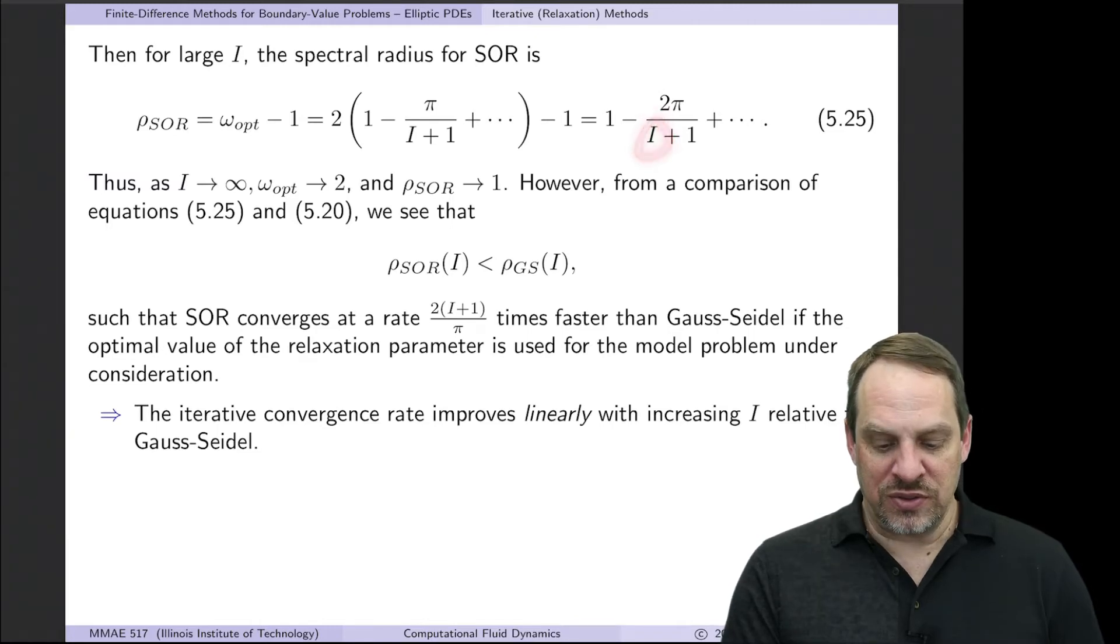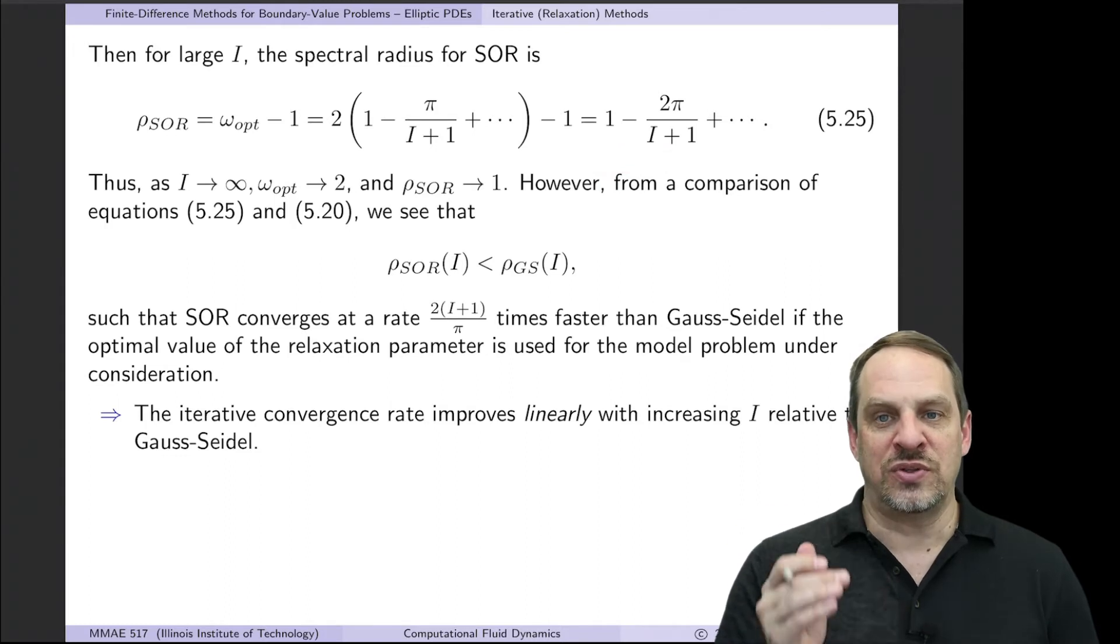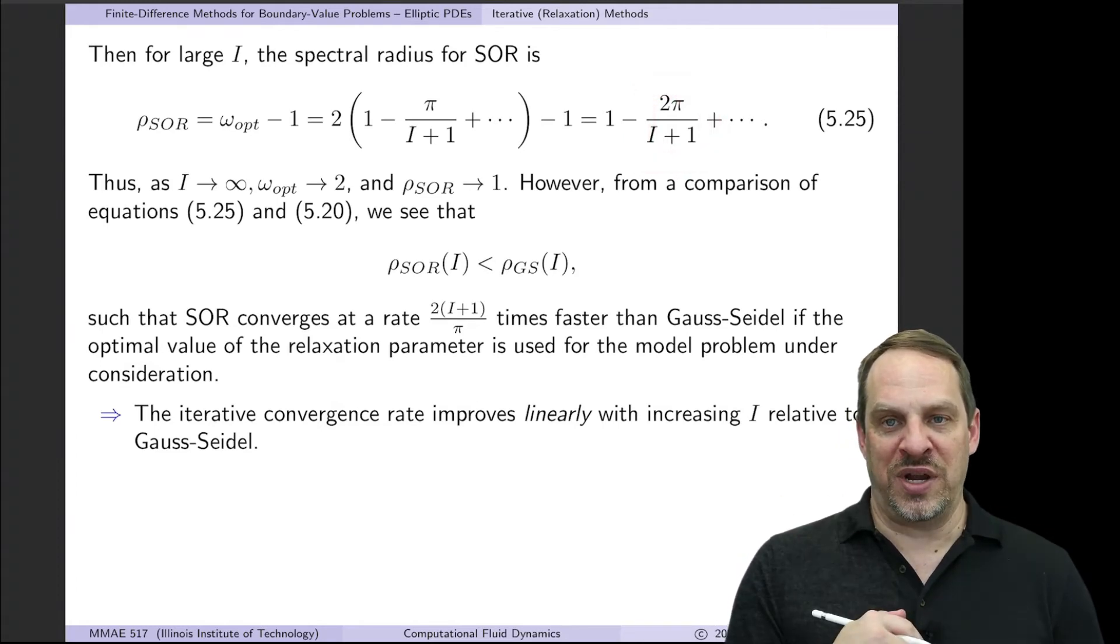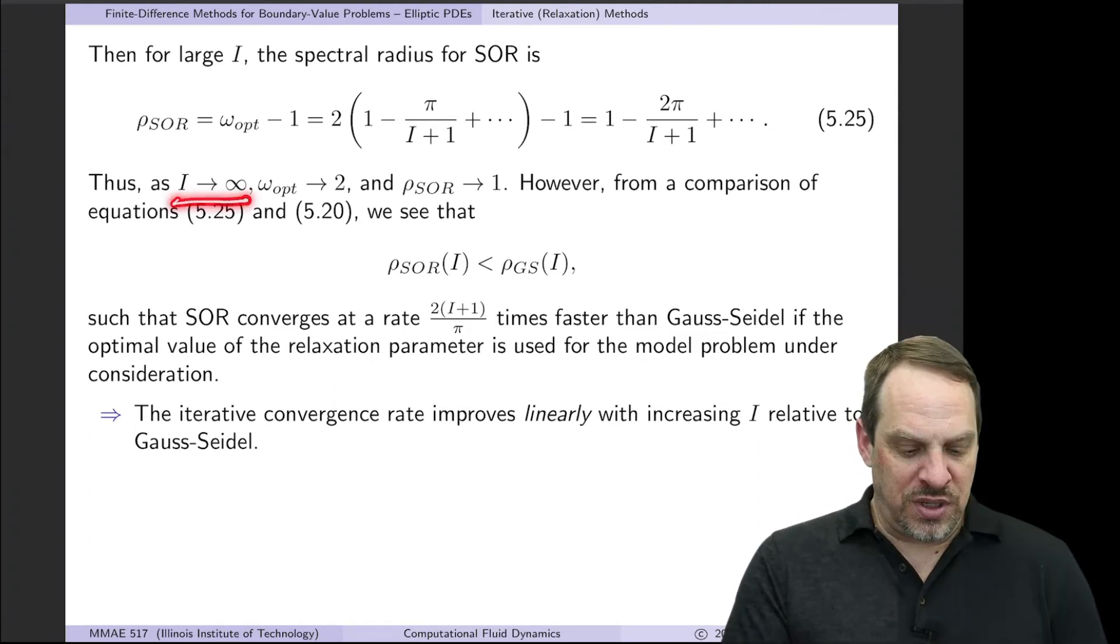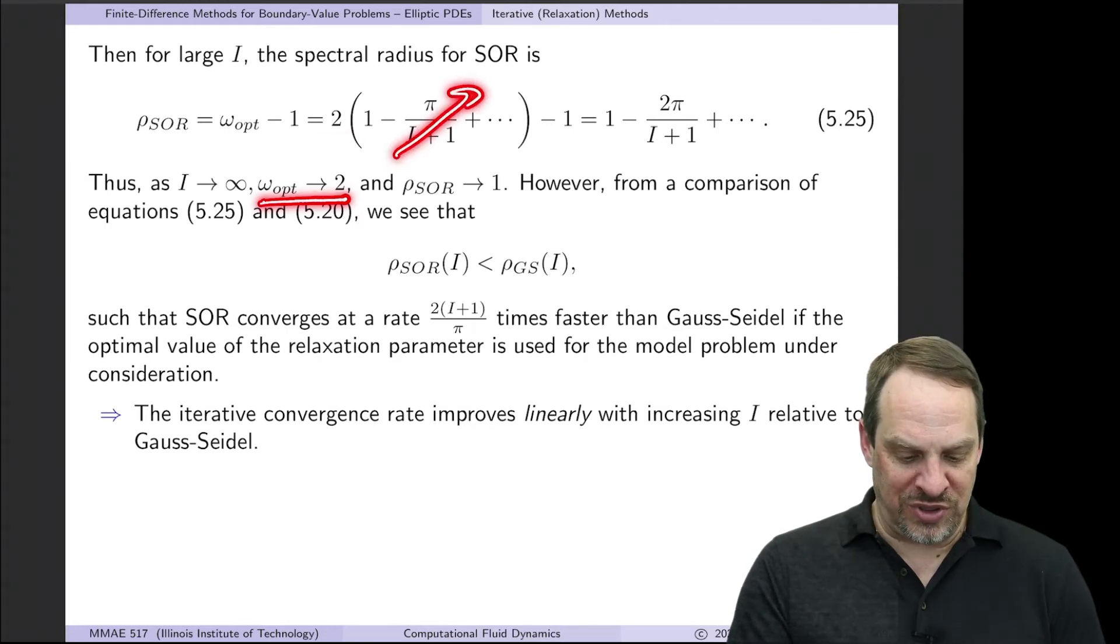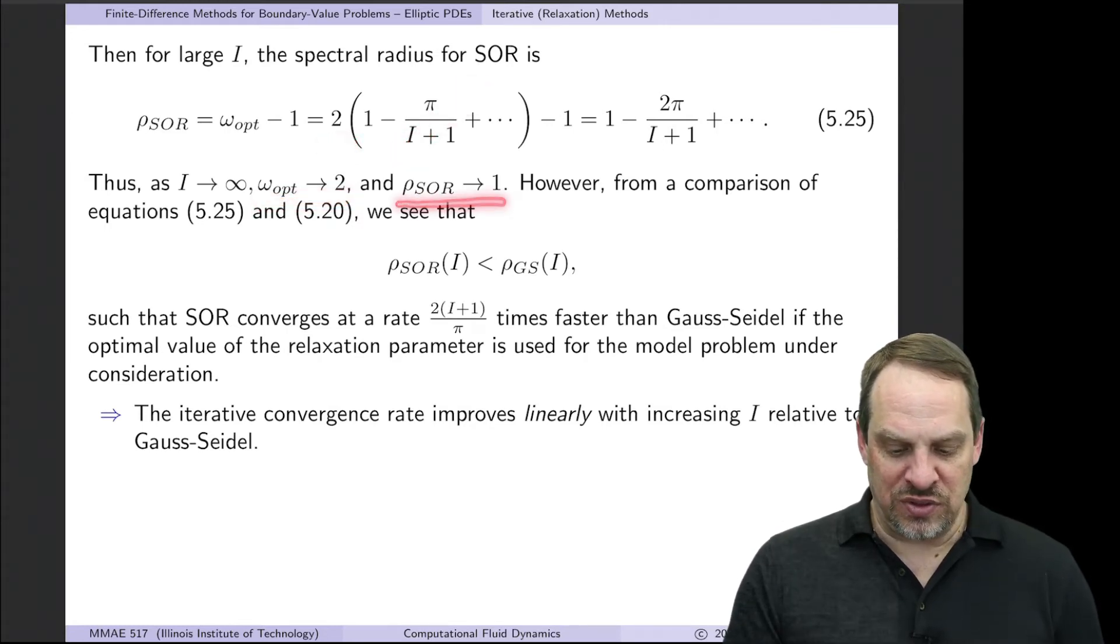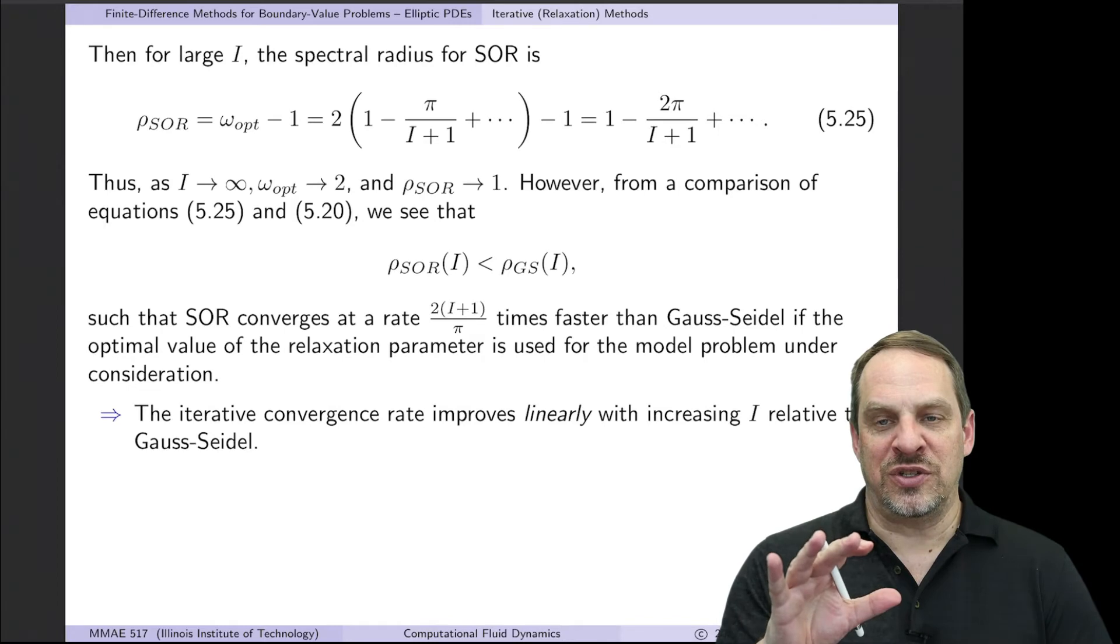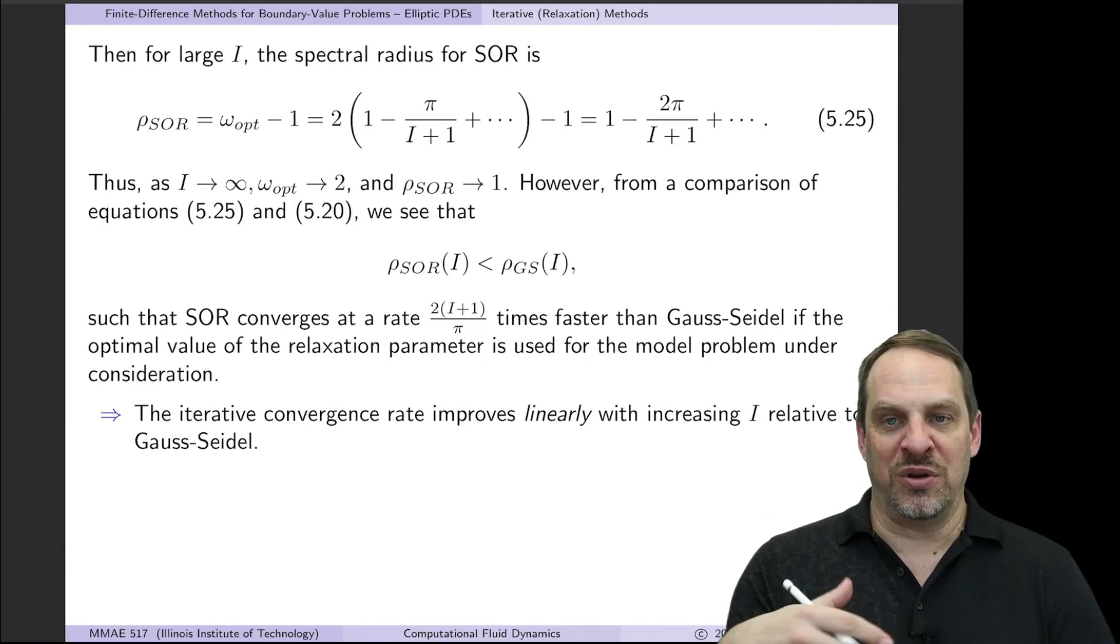So here is the omega_opt that we just had, minus 1. So this is 2 times 1, which of course is 1, minus 2*pi/(I+1), which you see here. So again, I is big, so this term is small, and it's 1 minus that small number, always less than 1, so this process will always converge. But what we want to do is compare this second term to see how much smaller than 1 the spectral radius is compared to Gauss-Seidel or Jacobi.